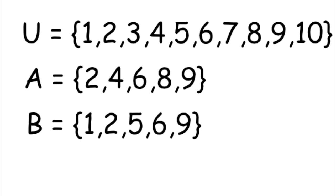We're given three sets. The universal set U is the usual suspects, the numbers 1, 2, 3, 4, 5, 6, 7, 8, 9, and 10. Within the context of the problem, these are the only things that exist. Also given are two sets A and B.